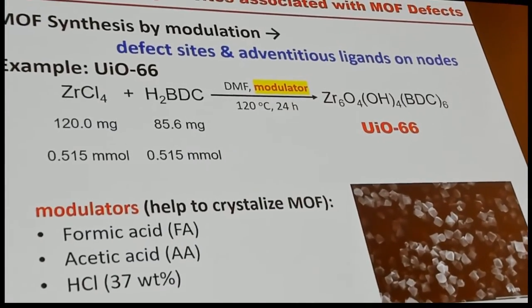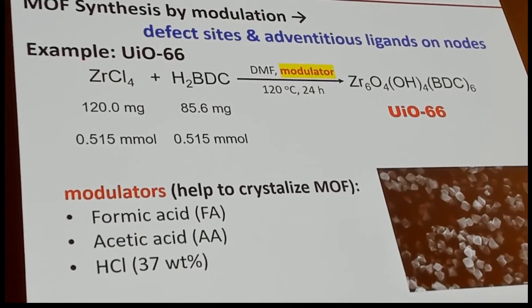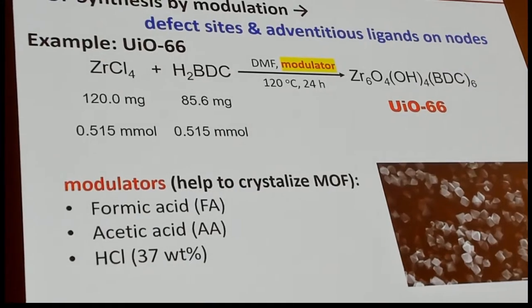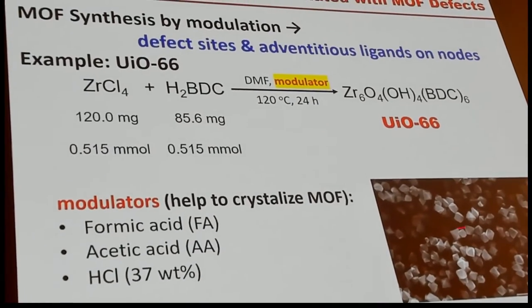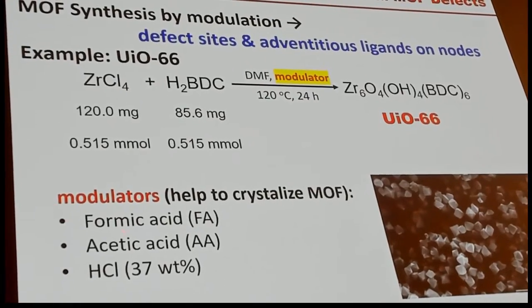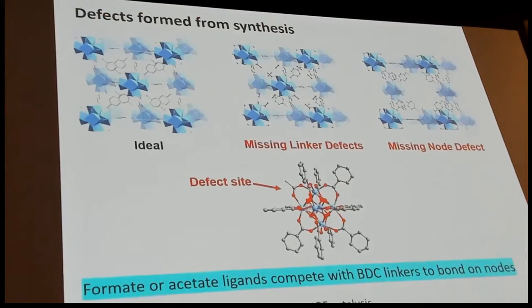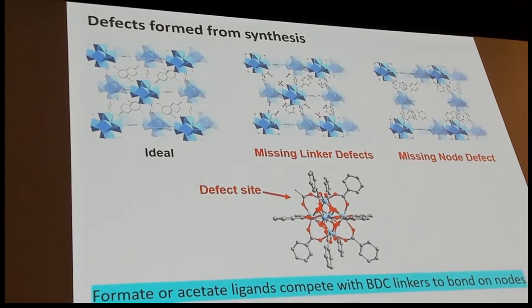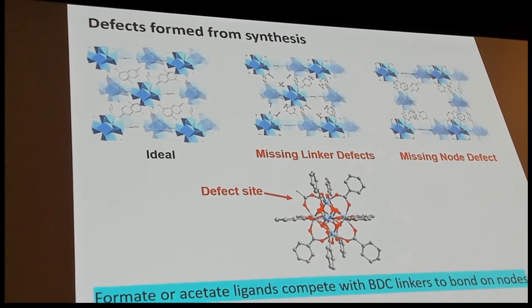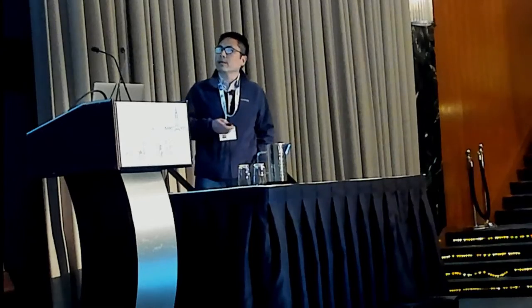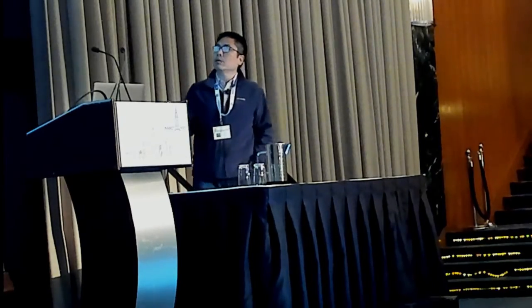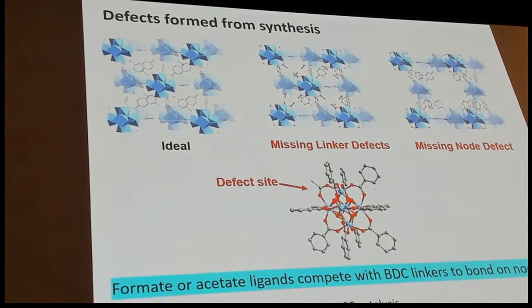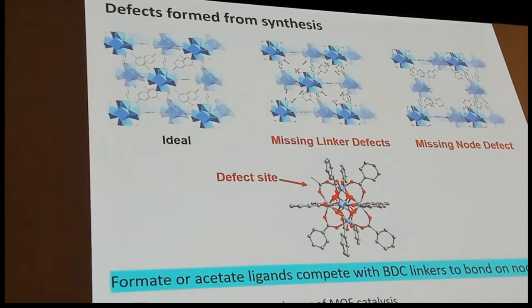In the well-investigated system UiO-66, it can be synthesized from zirconium tetrachloride reacting with H2-BDC at 120°C in DMF. A modulator can be added to slow down crystallization. Modulators can sometimes form acid or acidic side groups. Defects are formed by competition between modulators and linkers — both can bond to the nodes. When modulators bond to nodes, defects form. Defects are very important for MOF catalysis. Not only modulators, but the solvent itself can also bond to the node sites.